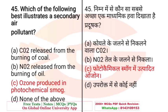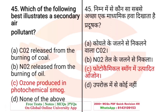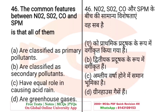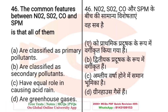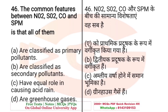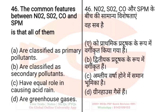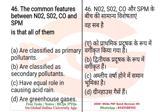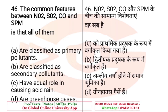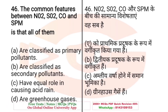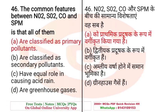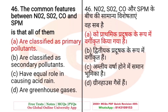Question: The common features between NO2, SO2, CO, and SPM is that all of them — A. Are classified as primary pollutants, B. Are classified as secondary pollutants, C. Have equal role in causing acid rain, D. Are greenhouse gases. The right answer is A — all of these are classified as primary pollutants.